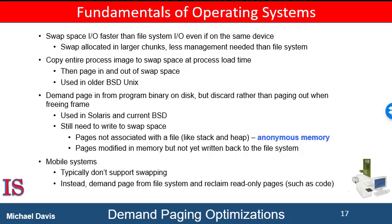Some systems attempt to limit the amount of swap space used through demand paging of binary executable files. Demand pages for such files are brought directly from the file system. However, when a page replacement is called for, these frames can be overwritten because they are never modified, and the pages can be read in from the file system again if needed. Using this approach, the file system itself serves as the backing storage. However, swap space must still be used for pages not associated with a file, such as the stack and the heap for the process.